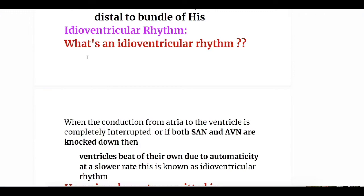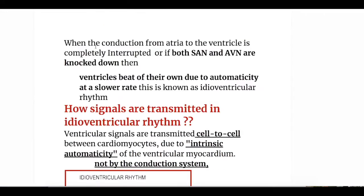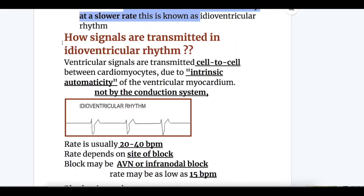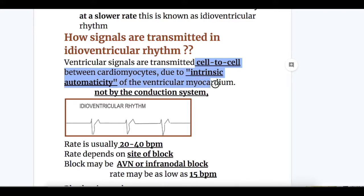The second condition is idioventricular rhythm. When conduction from the atria to the ventricle is completely interrupted, or if both SA node and AV node are knocked down, then the ventricle beats on its own due to automaticity at a slower rate — this is known as idioventricular rhythm. Ventricular signals are transmitted cell to cell between cardiac myocytes due to intrinsic automaticity, not by the conduction system.